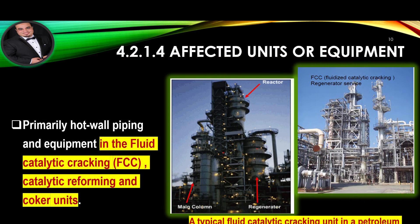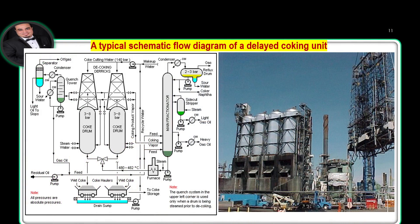Affected Units or Equipment: Primarily hot wall piping and equipment in the fluid catalytic cracking (FCC), catalytic reforming, and coker units. A typical fluid catalytic cracking unit in a petroleum refinery and a typical schematic flow diagram of a delayed coking unit are shown in the images.